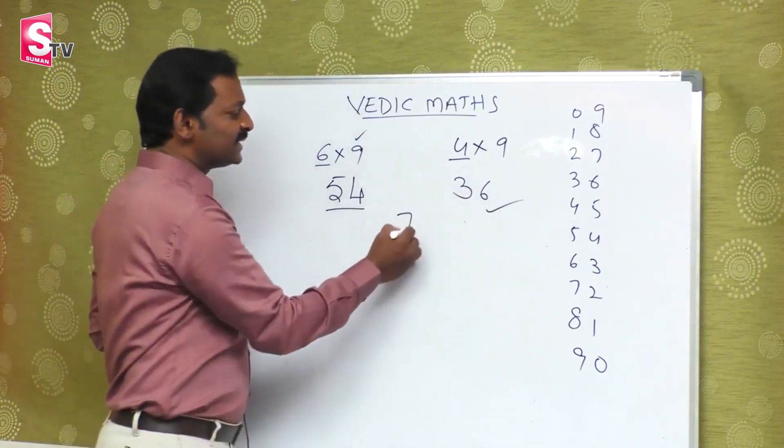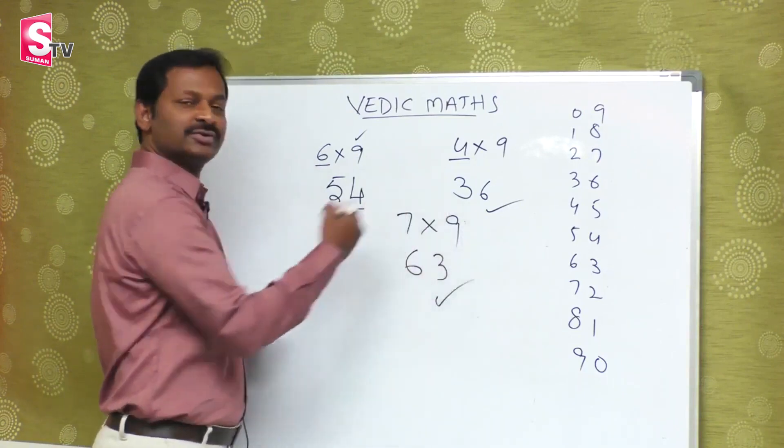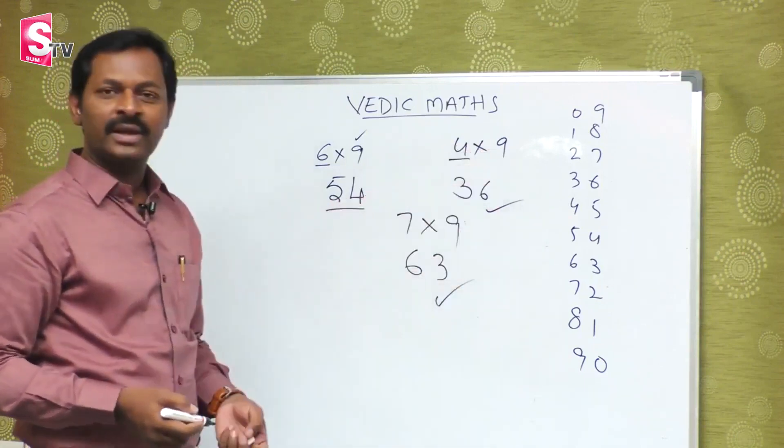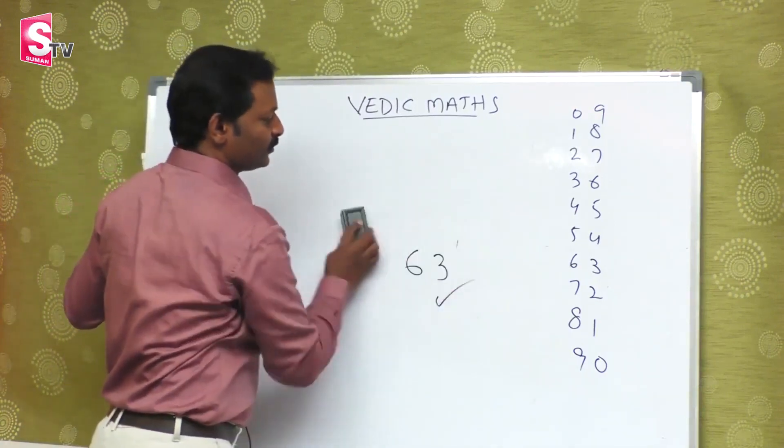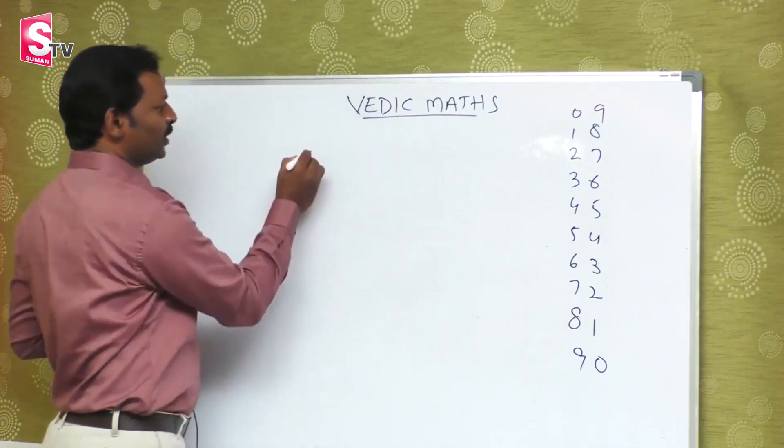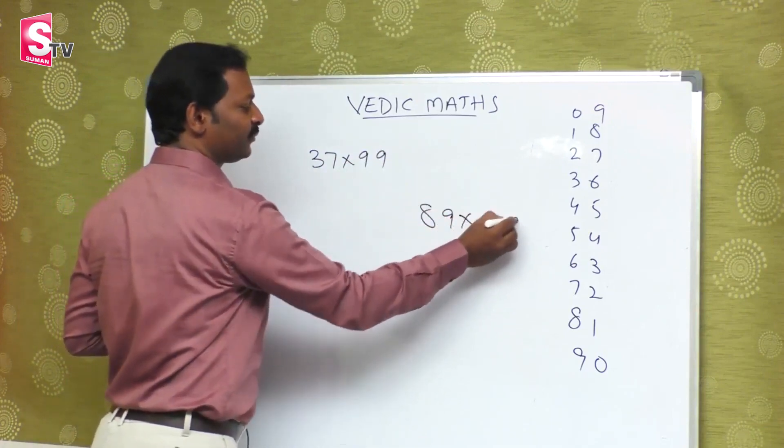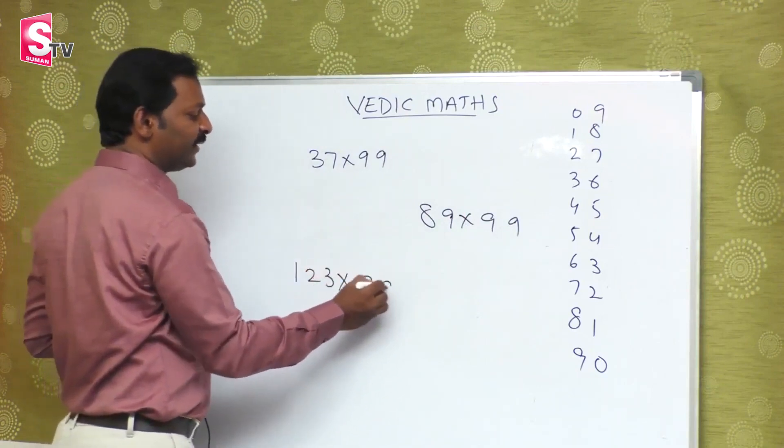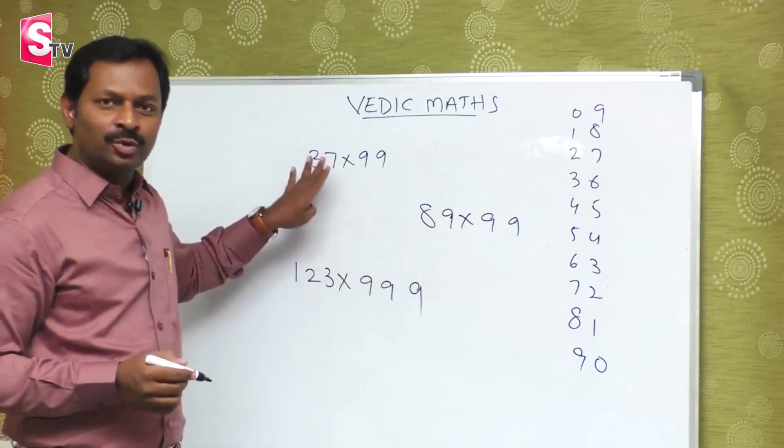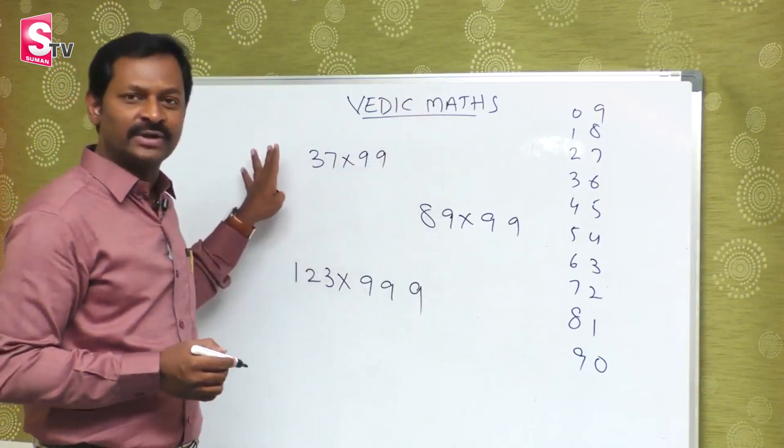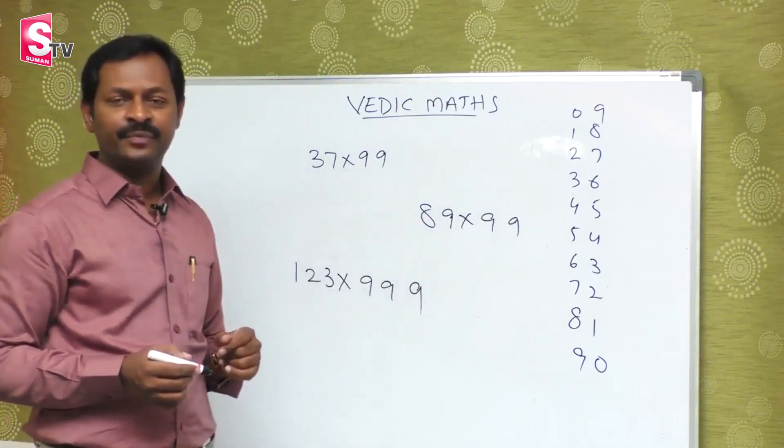I will memorize the table 100%. You should learn the table by heart. Here we have two digits with two 9s, and here we have three digits with three 9s. We have to show this concept.